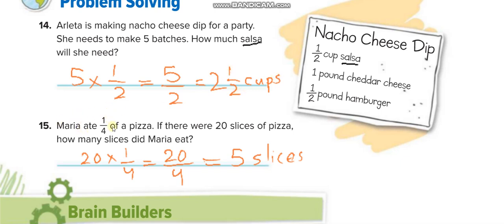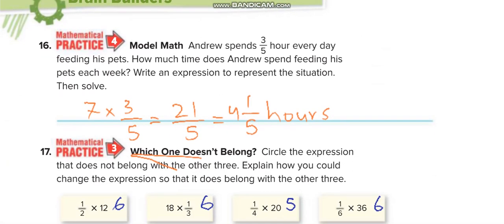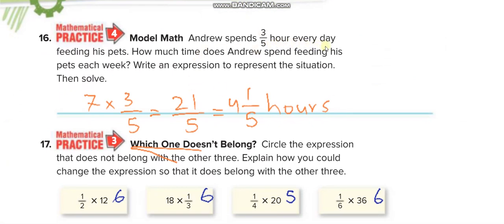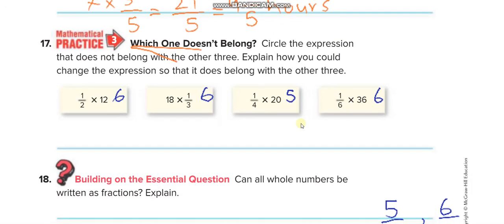Maria ate one-fourth of a pizza. If there were 20 slices, so 20 times, what is one-fourth of 20? 20 times 1 is 20. 20 over 4 equals 5 slices. Andrew spent three-fifths hours every day feeding his pets. How much time does Andrew spend feeding his pet each week? So every day three-fifths hours, and in one week there are 7 days. So 7 times three-fifths. 7 times 3 is 21 over 5. Then you simplify it.